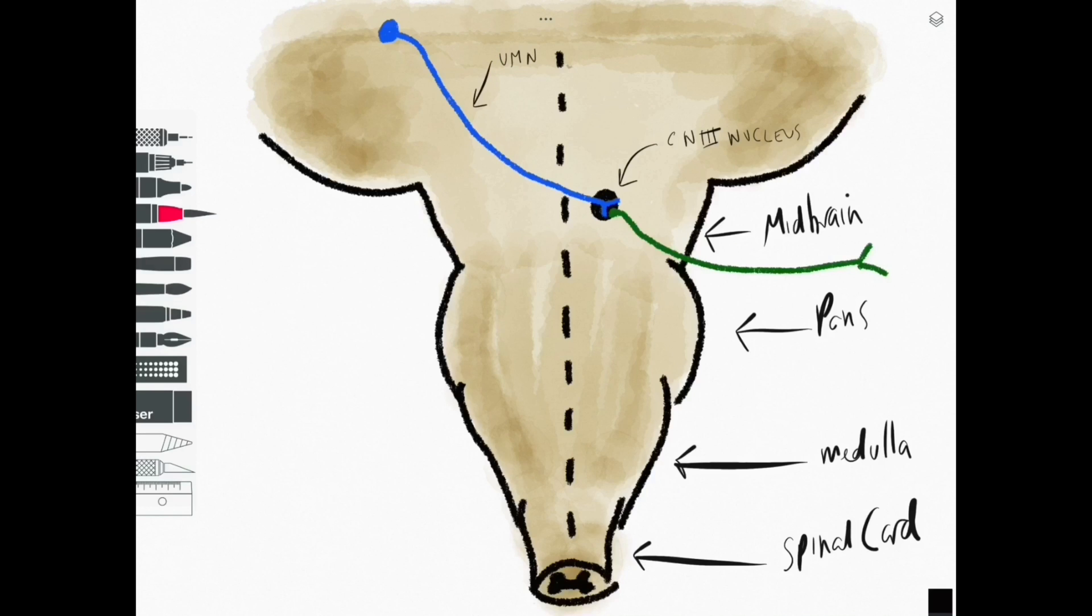The vertebral arteries unite to form the basilar artery, and we get pontine arteries coming from the basilar artery, and that will eventually continue to connect with the arterial circle known as the circle of Willis to give off the posterior cerebral artery.